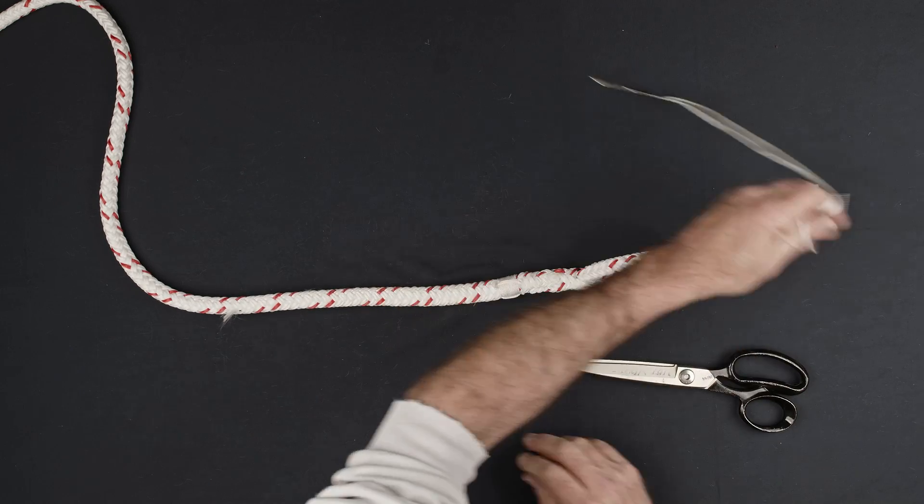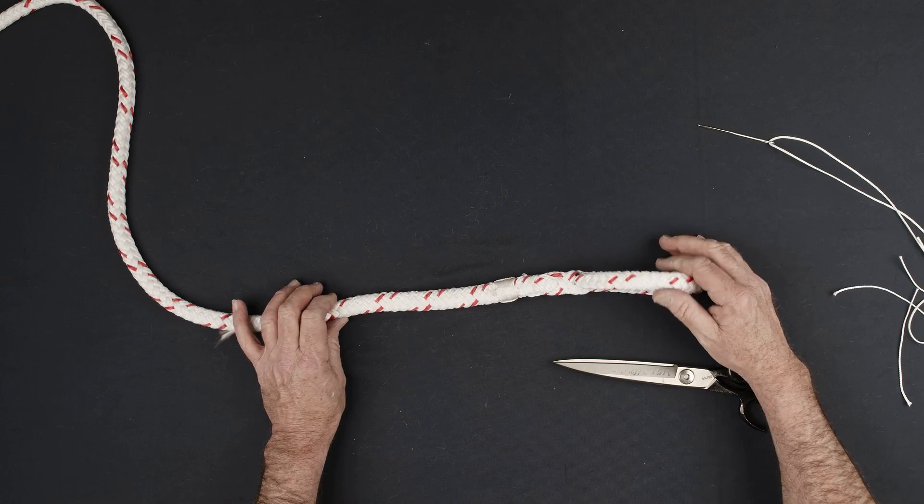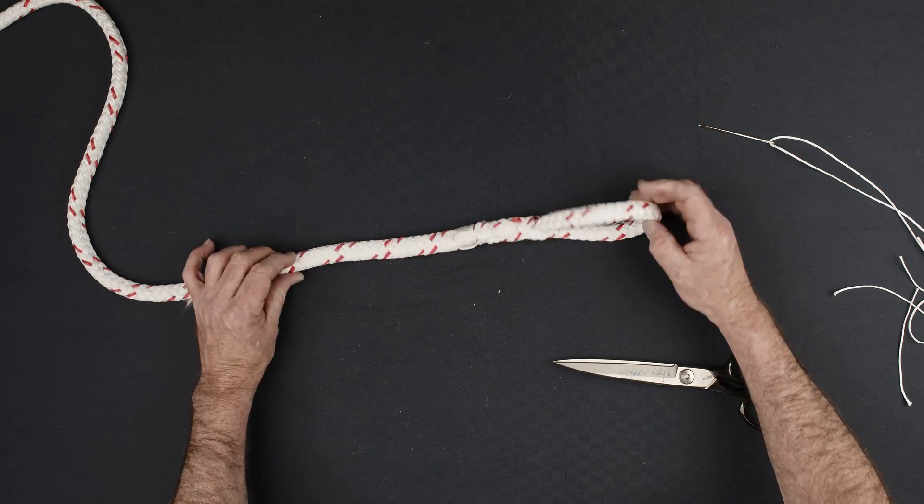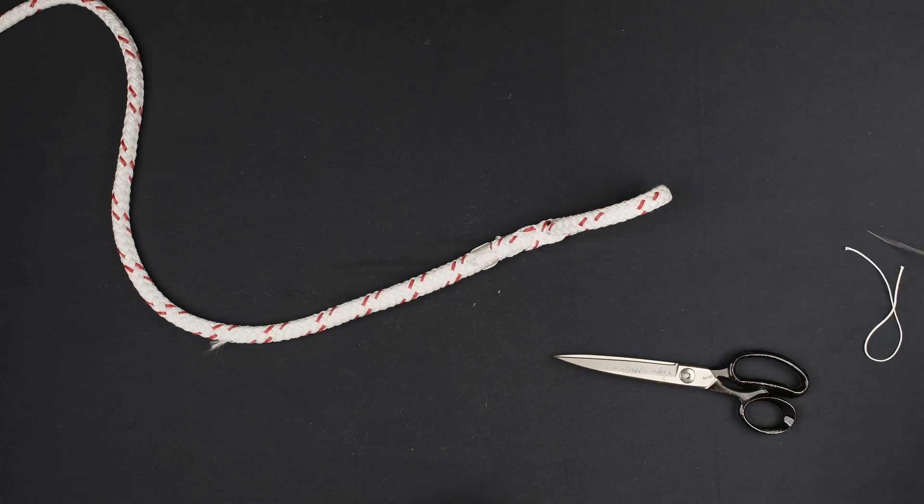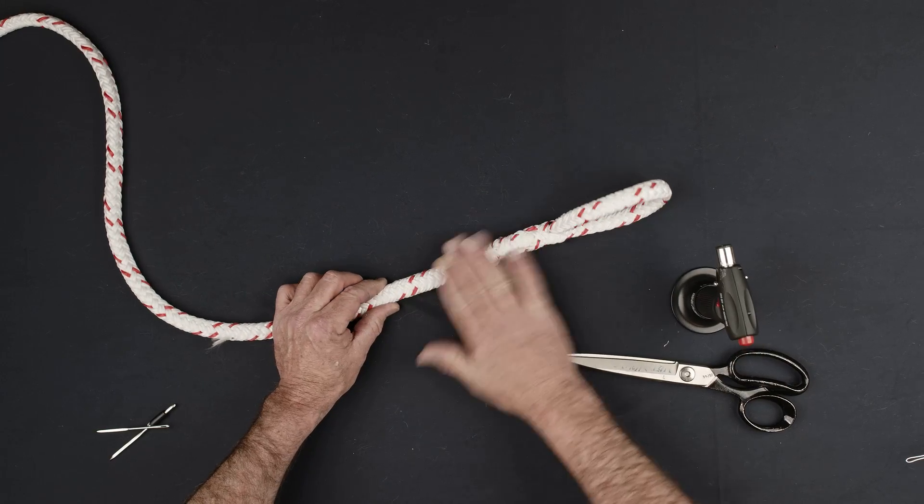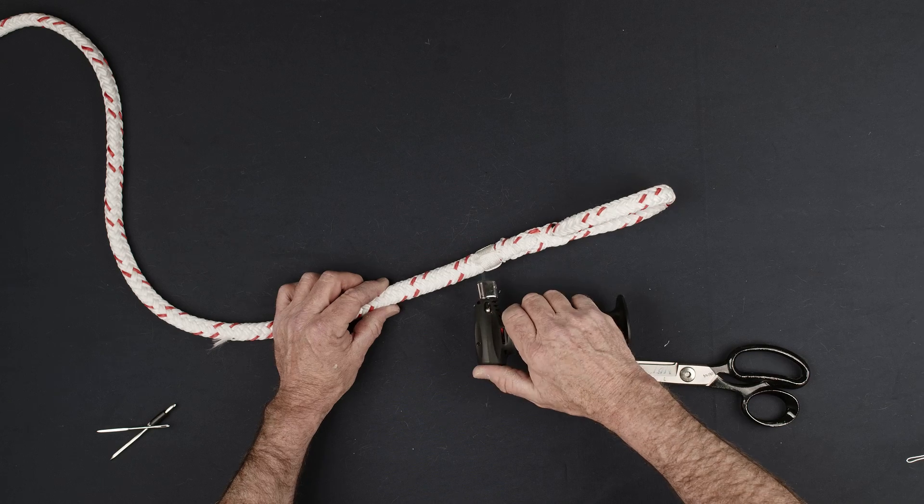Trim any excess whipping twine. When performed correctly, the whipping will have four strands symmetrically located around the circumference of the rope. Use a torch or a lighter to melt the ends of the whipping twine.